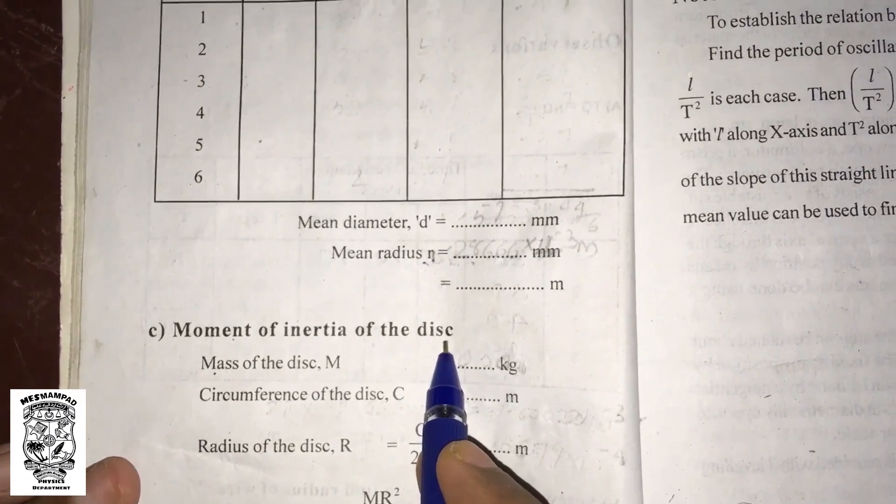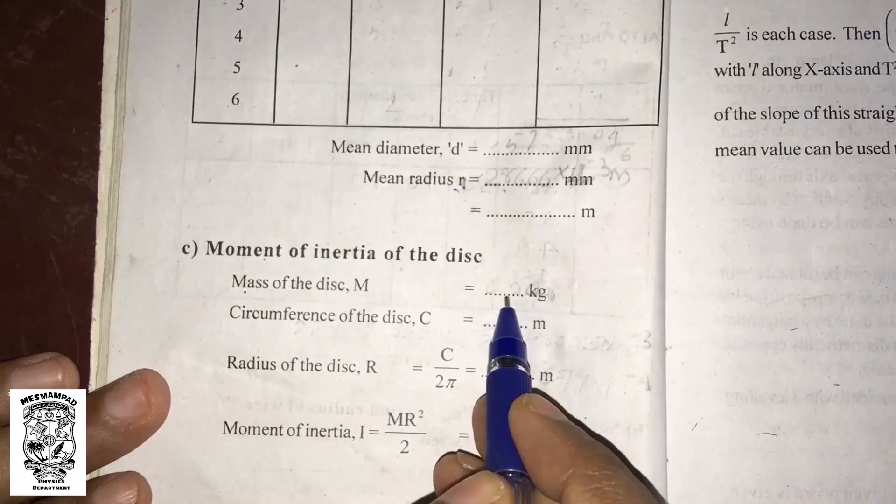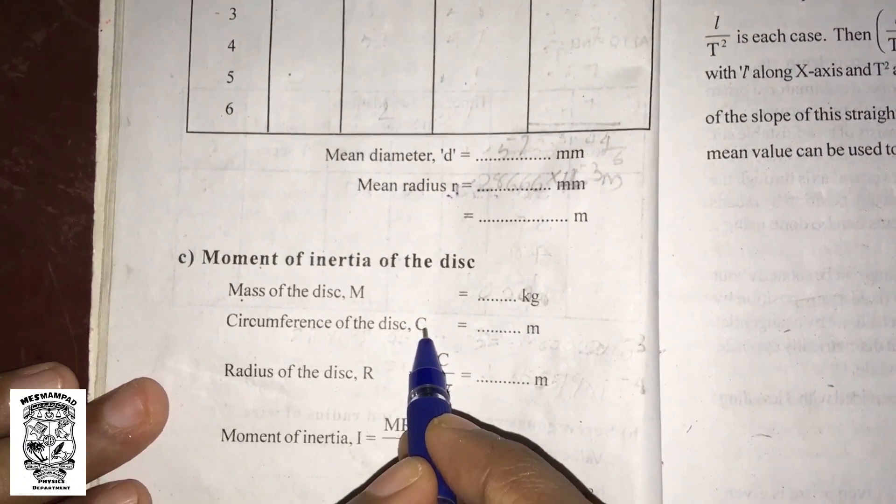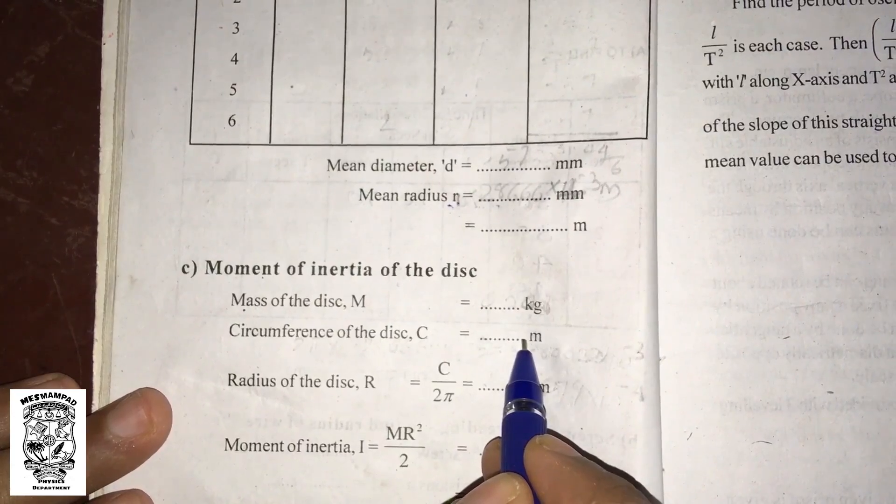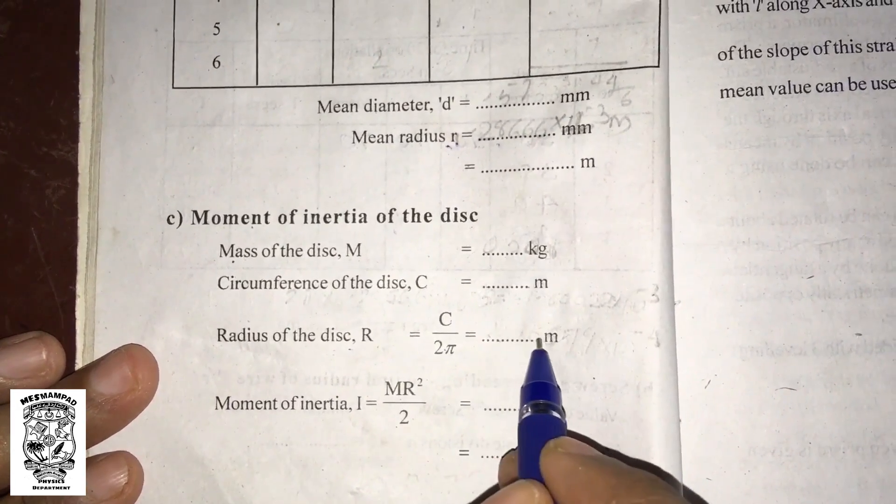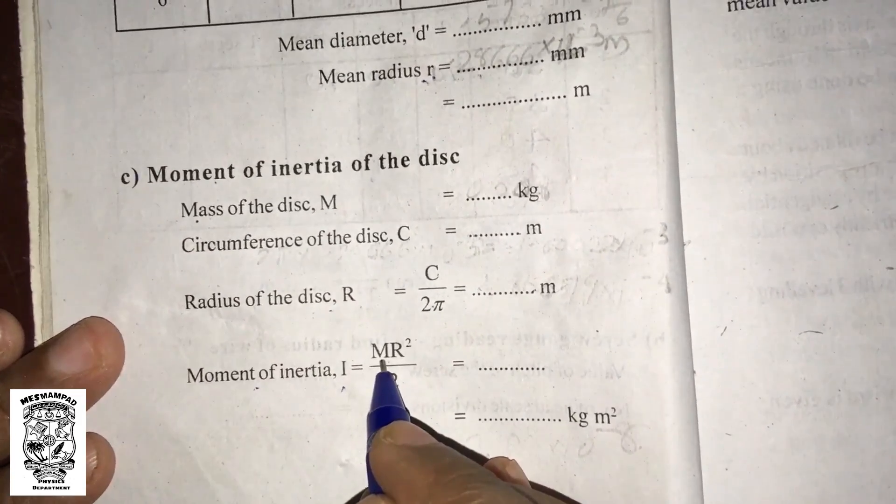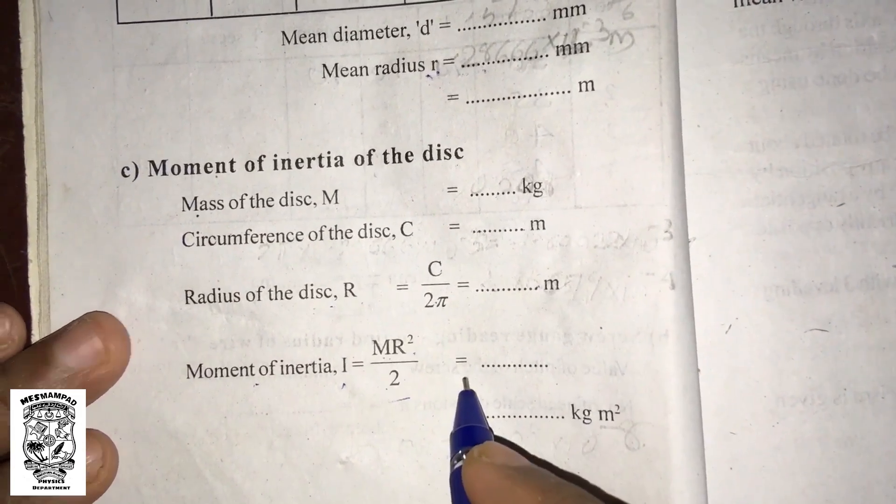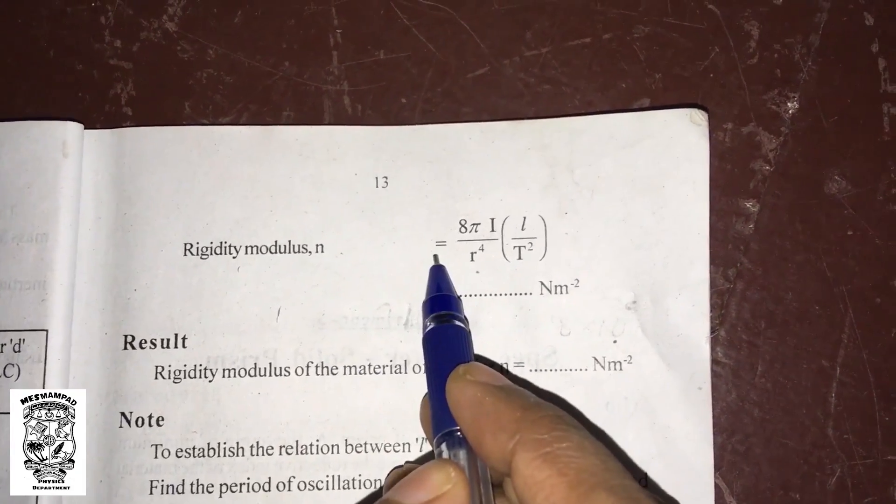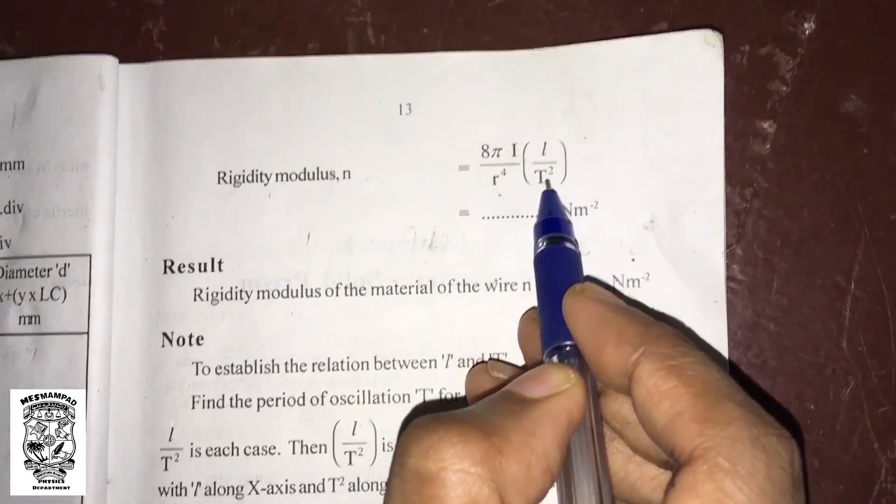Then, moment of inertia of the disc. Mass of the disc is capital M. We can measure the disc circumference or perimeter, and we can calculate the radius of the disc. The radius of the disc is C by 2 pi. We can calculate using R raised to 4 times L by T squared.